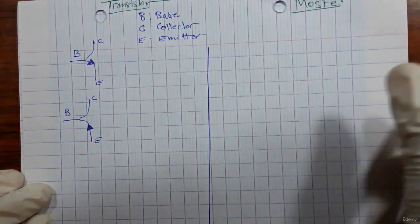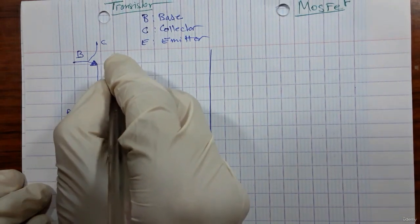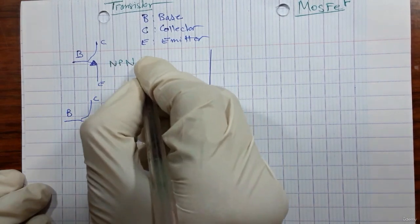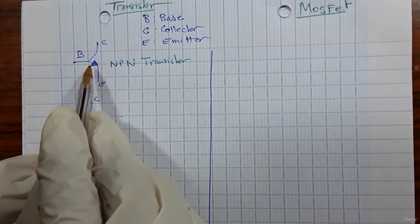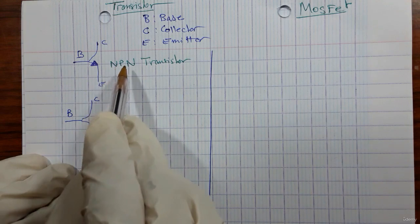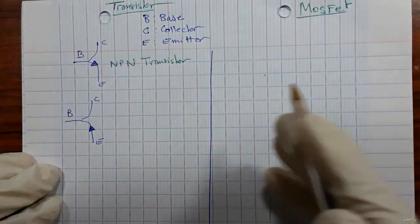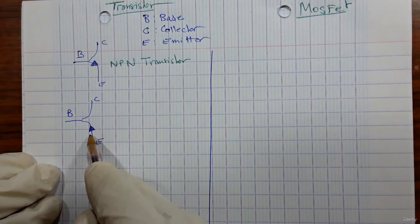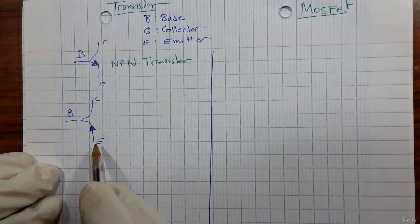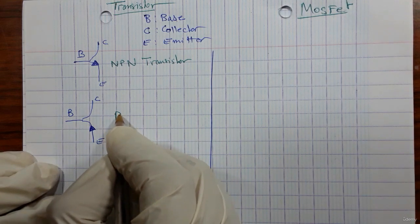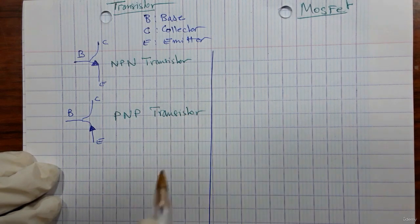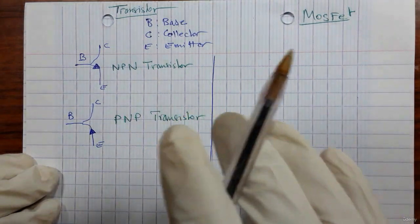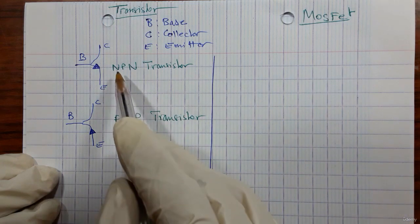When the arrow goes from base to emitter, this is an NPN transistor. When the arrow goes in the other direction — from emitter to base — we call this a PNP transistor. I will show all this using the multimeter and we will differentiate between PNP and NPN transistors.